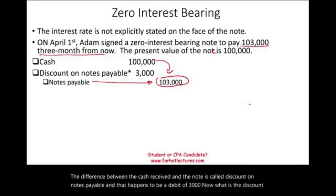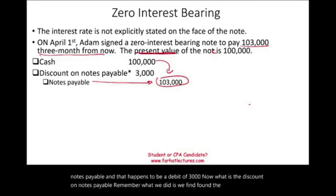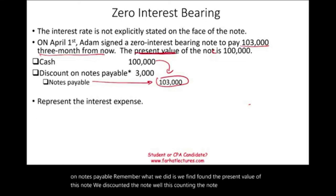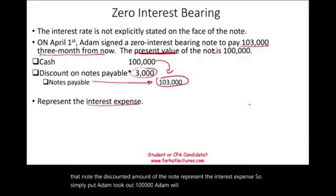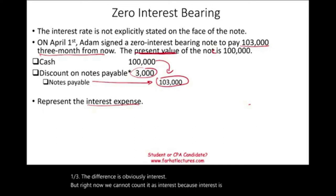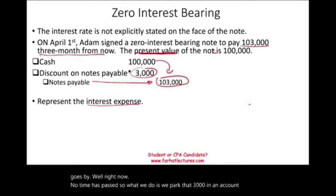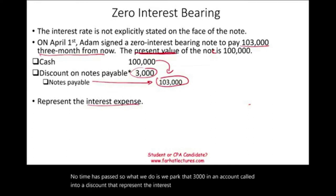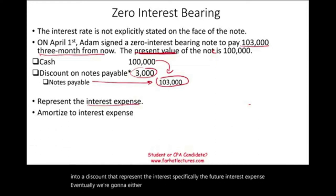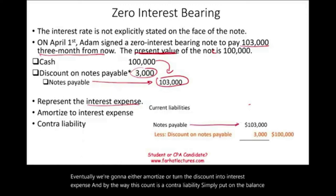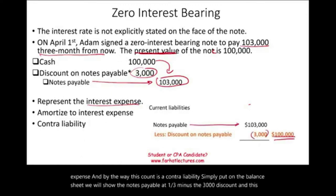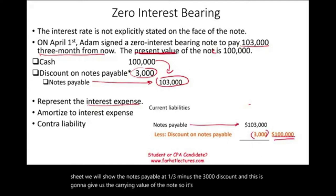The discount on notes payable represents the interest expense. Adam took out $100,000 and will pay back $103,000 — the difference is clearly interest. But right now, no time has passed, so we can't record it as interest yet. We park the $3,000 in the discount account, which represents future interest expense. Discount is a contra liability — on the balance sheet, notes payable of $103,000 minus the $3,000 discount gives us the carrying value of the note.